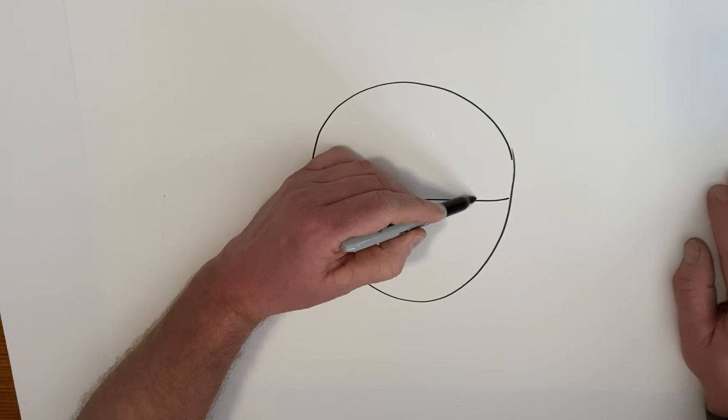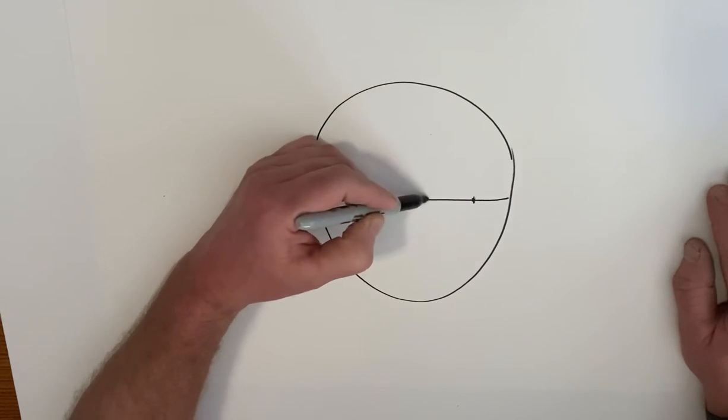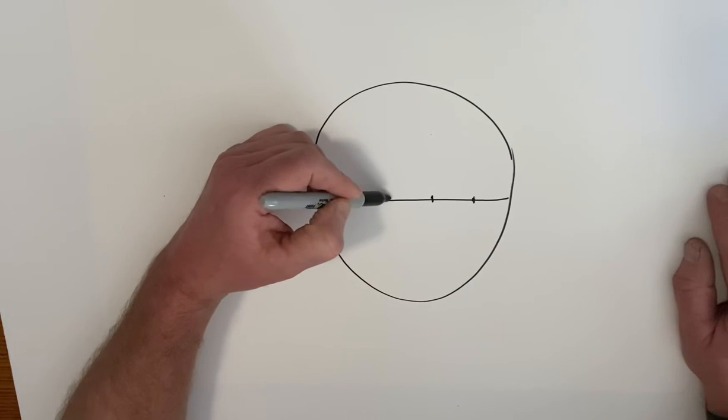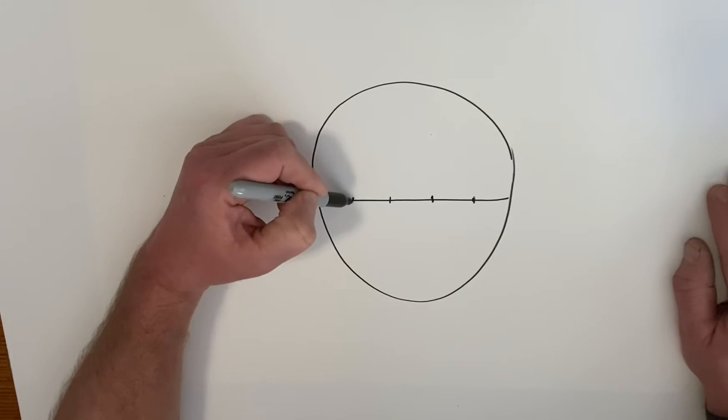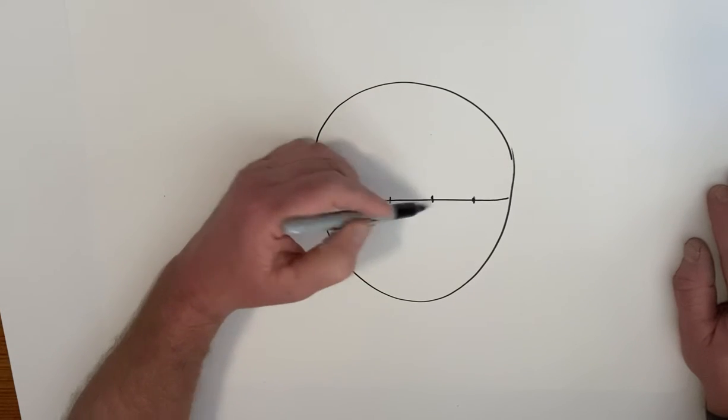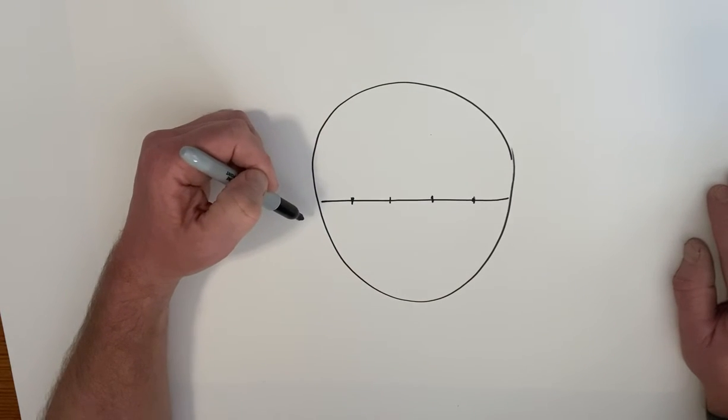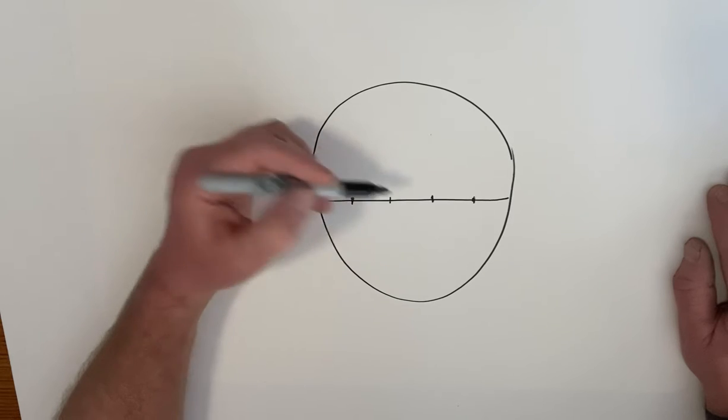When I say an eye space, I'm talking about however big an eye is. That's how many spaces go across. There's five of those spaces across the head, the face, and there's one of those spaces in between.